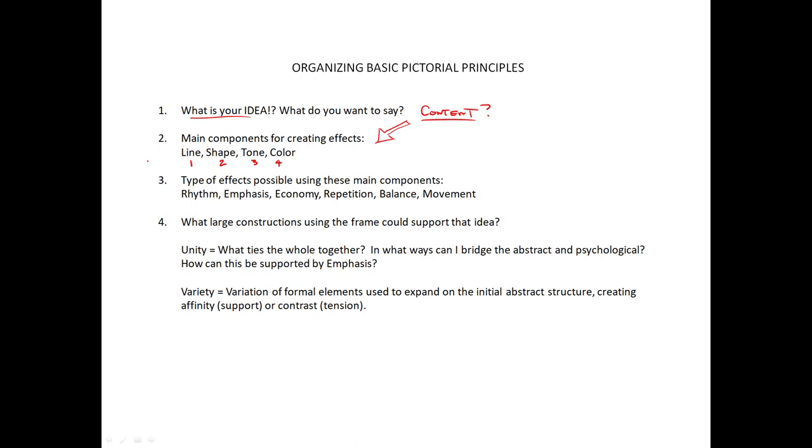From these four, you only have six possible effects. You can use line, shape, tone, or color to create rhythm, emphasis, economy, repetition, balance, or movement. That's it. These are design principles. And that's most what people are looking for or designing with. So even though it seems like there's a lot here, at least it's limited. This is what people are working with. This is how people compose. So as long as you can understand what's here over the course of the semester, you're going to have a really solid idea and practice of composition.